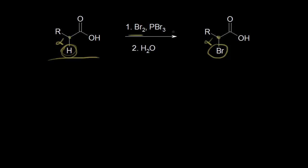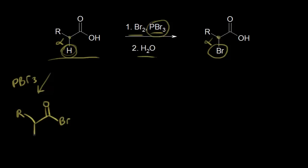In the first step, we add bromine and phosphorus tribromide, and in the second step, we add water. Starting with phosphorus tribromide: if you add PBr3 to a carboxylic acid, the phosphorus tribromide is going to turn the carboxylic acid into an acyl bromide. So we substitute a bromine for the OH to form our acyl bromide, still thinking about this alpha proton.